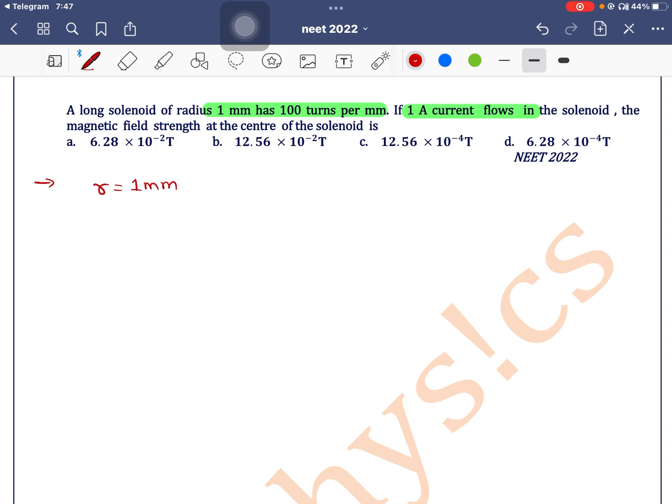one millimeter and number of turns per unit length, that is n, is equal to hundred turns per millimeter. So we can write this is equal to hundred turns per millimeter means 10 to the power minus 3 meter, which is equal to 10 to the power 5 turns per meter, and current is equal to 1 ampere.